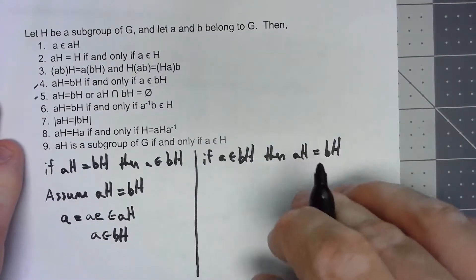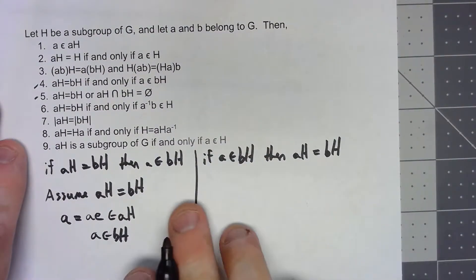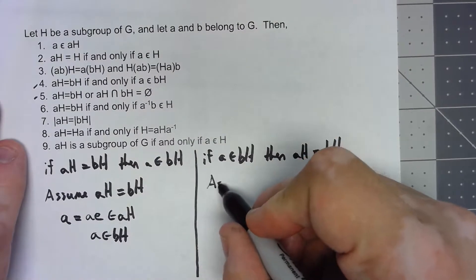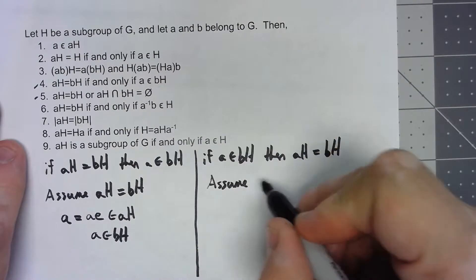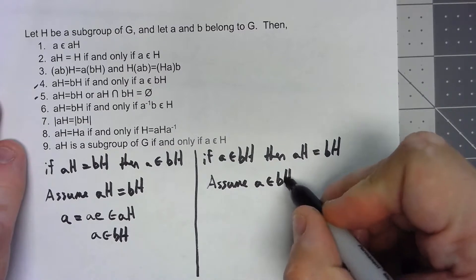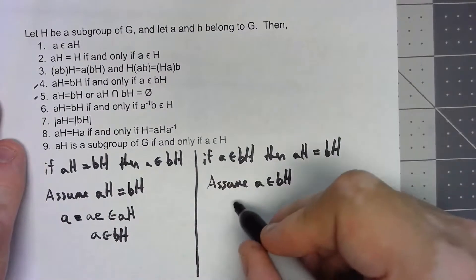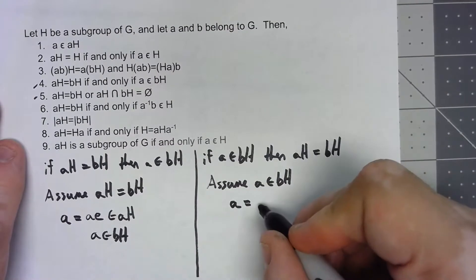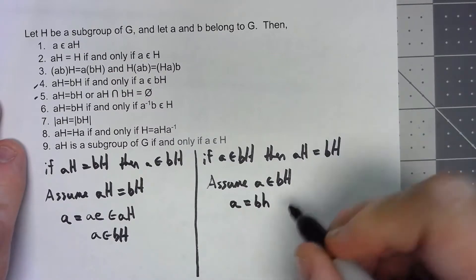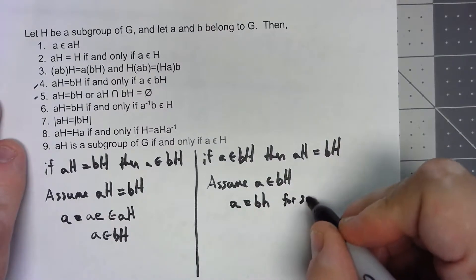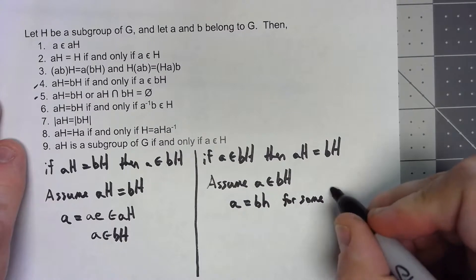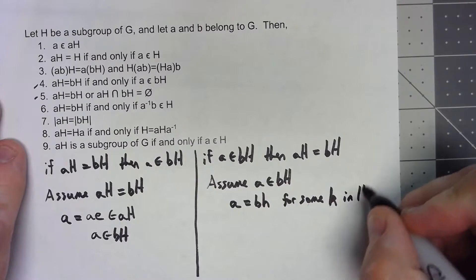The other one is just a little bit trickier. So we're going to assume that A is in BH, so by definition that means that A has to equal B times H for some H in H.